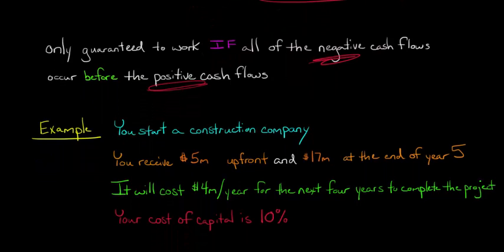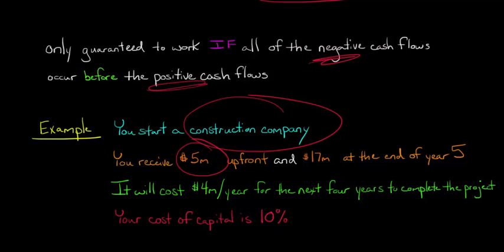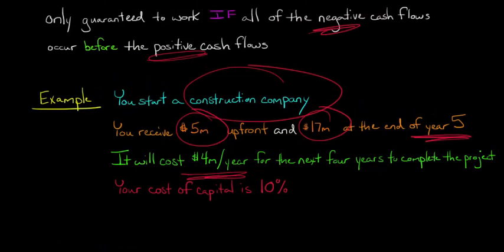So in our example, let's say you start a construction company and you get this first project where you receive $5 million up front as a down payment, and then the rest of the money — $17 million — at the end of year five. So it's going to be a five-year project. For the first four years of the project, you're going to be incurring expenses as you build this building, at $4 million a year in expenses. Let me walk you through a timeline to make sure you understand how the cash flows are working out.